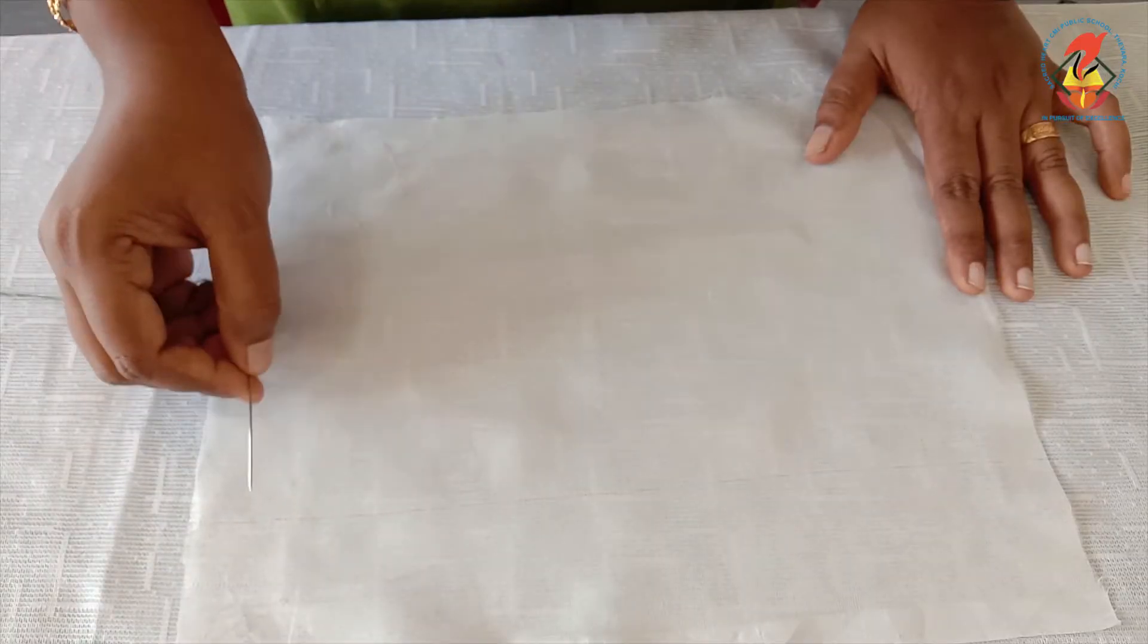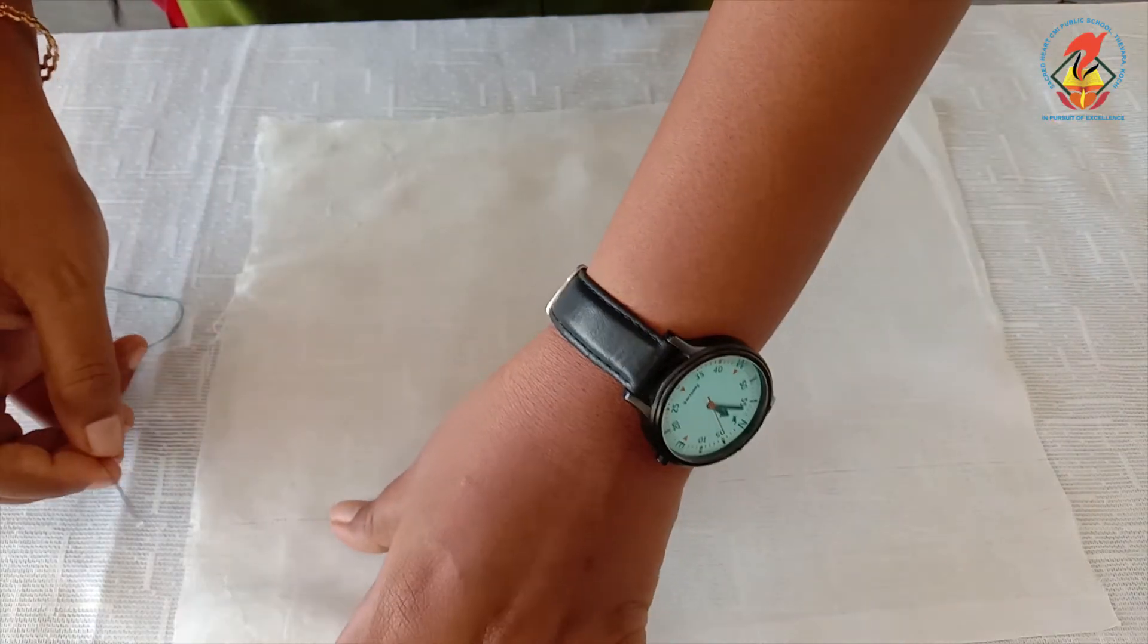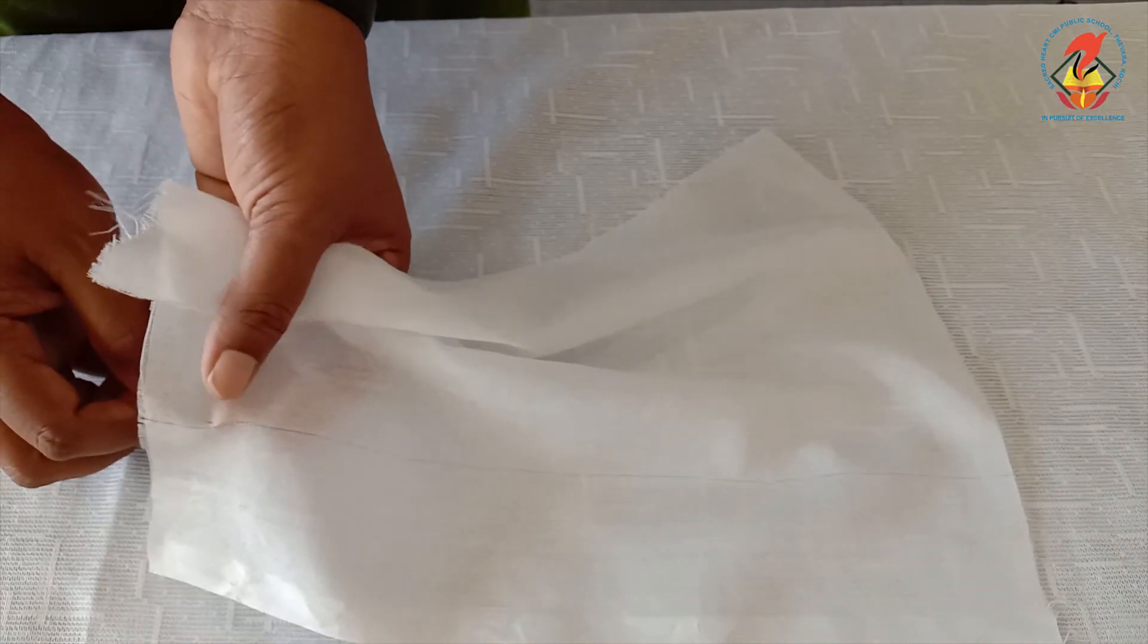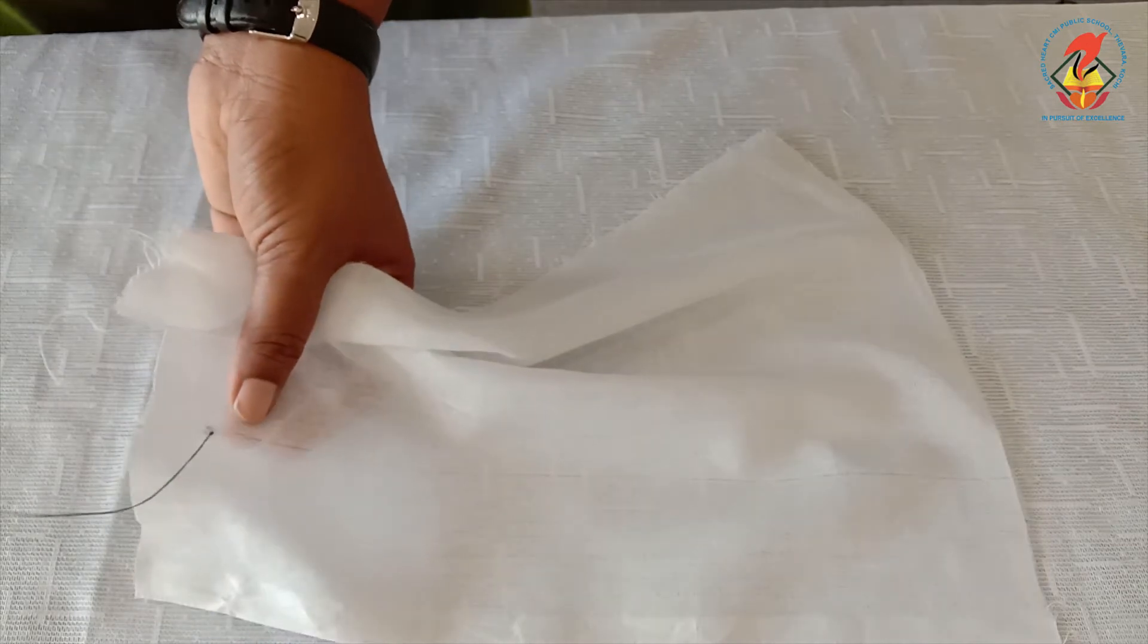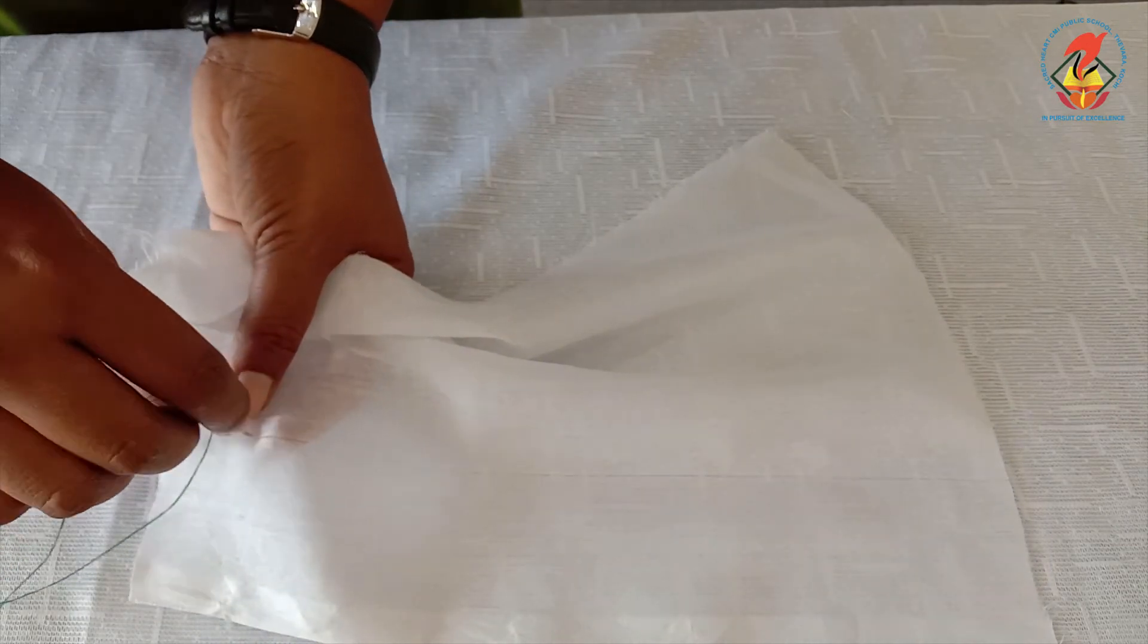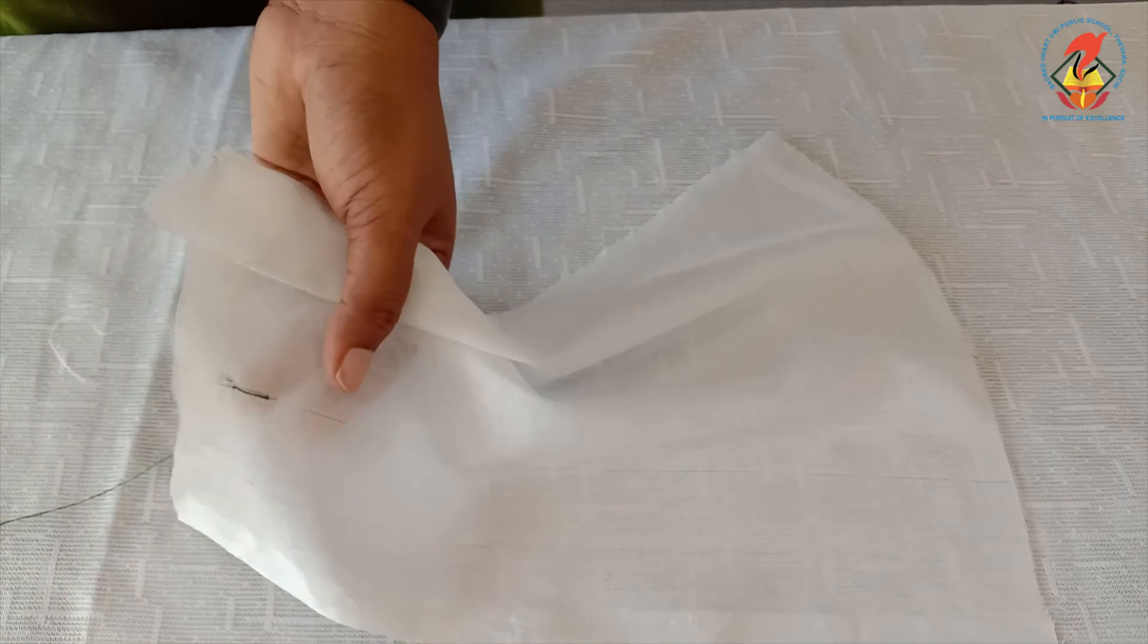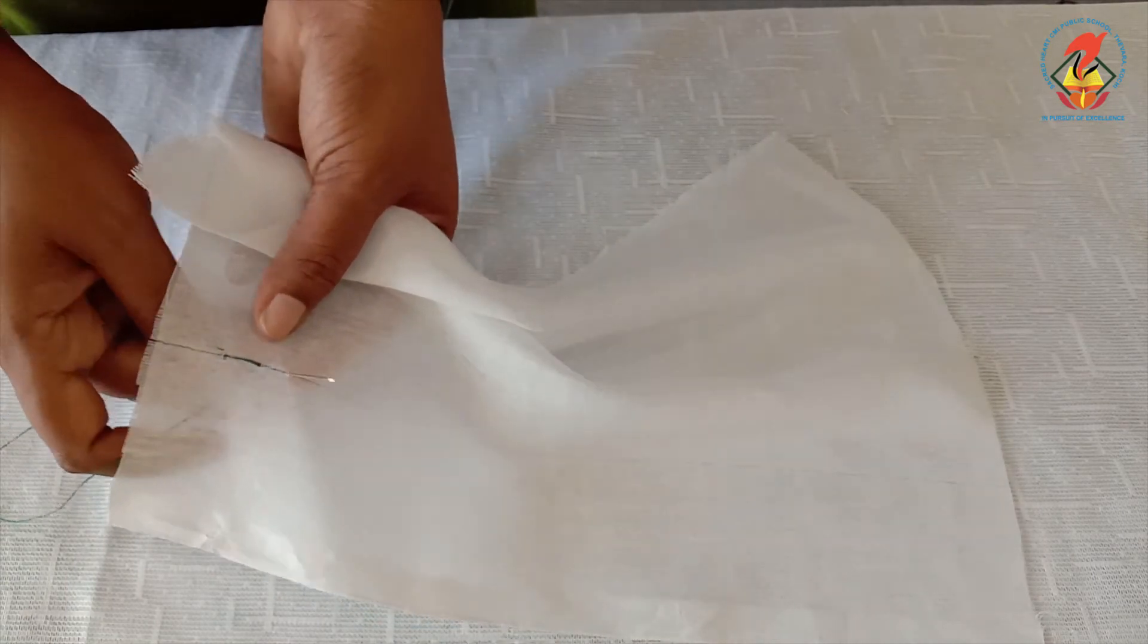Now, we are going to sew through this line. Start sewing from the back of the cloth. And pull the thread and go down as we have done earlier. You can continue this following the line.